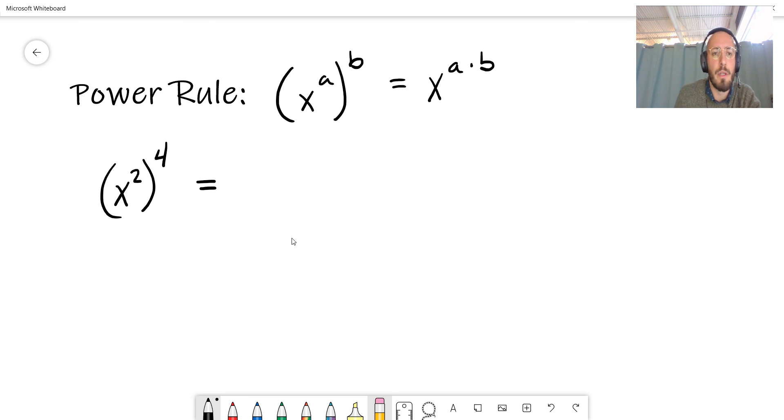we are going to multiply these exponents together and keep our same base. So our x is still our base, and we multiply 2 times 4 to get our new power of 8.